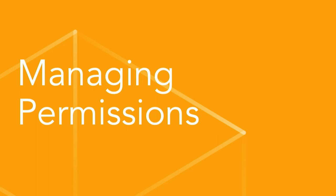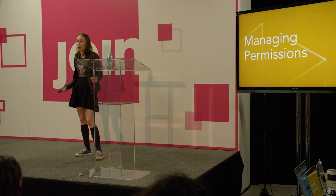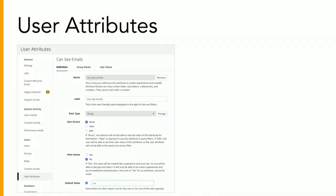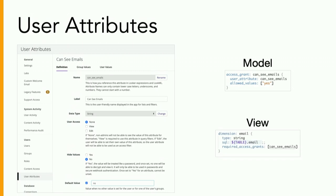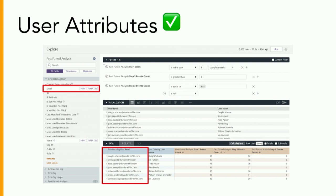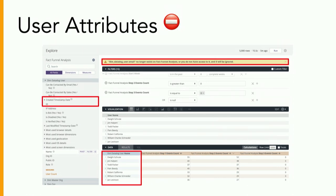Since we're all in the data industry, those email addresses are real people's information and we have a responsibility to handle it appropriately. We manage permissions at a model level, but for product analytics we want broad access throughout the business. For PII specifically, we use user attributes — a 'can_see_emails' attribute that defaults to 'no' and can be toggled on for those with proper requirements. We call the access grant at the model level and apply it to the email dimension in the view. Users without permission won't see the email field, won't see it in results, and will see an error message.